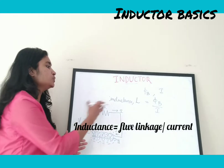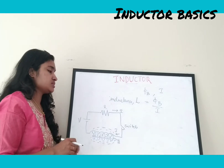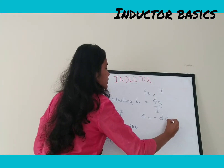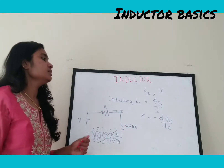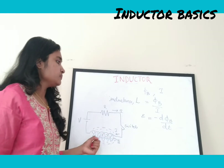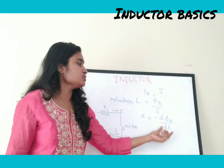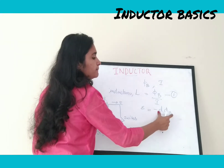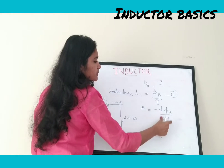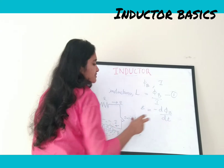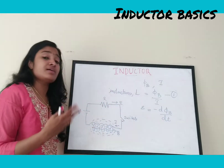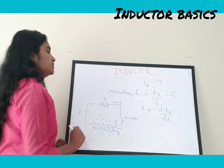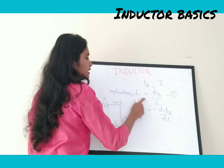The EMF is represented as ε, where ε = −dΦ_B/dt. Due to the change in current, the magnetic field strengthens, and the EMF generated equals the rate of change of magnetic flux linkage Φ_B. The negative sign exists because this EMF opposes the increase in the magnetic field. Since Φ_B = L × I, we substitute this into the equation.